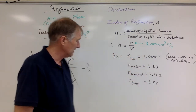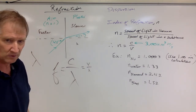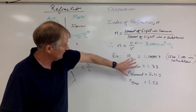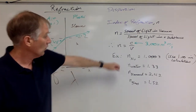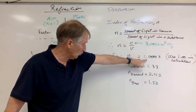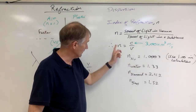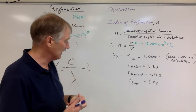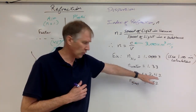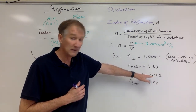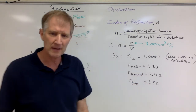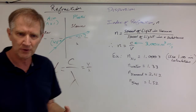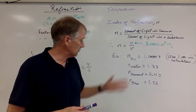These index values are given for yellow light, but we'll use them for all colors to keep calculations straightforward. For air, n ≈ 1. For water, n ≈ 1.33. Diamond is the most optically dense naturally occurring material with n ≈ 2.42, meaning it slows light down a lot. One type of glass has n ≈ 1.52. The index is also temperature-dependent.